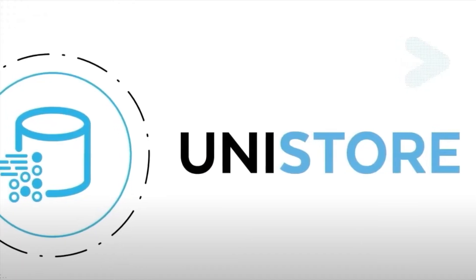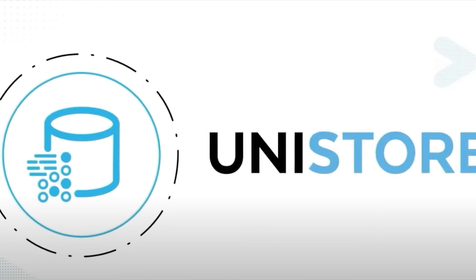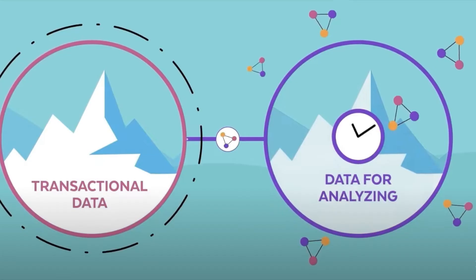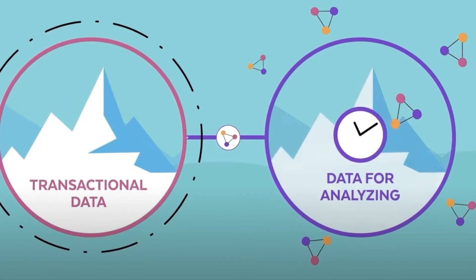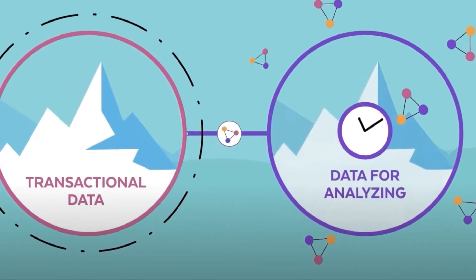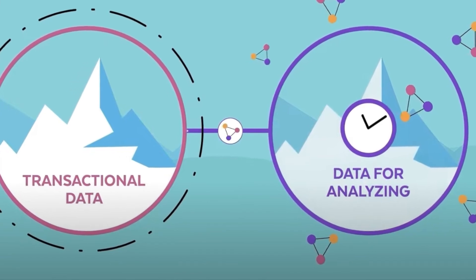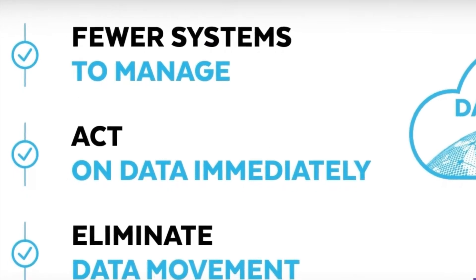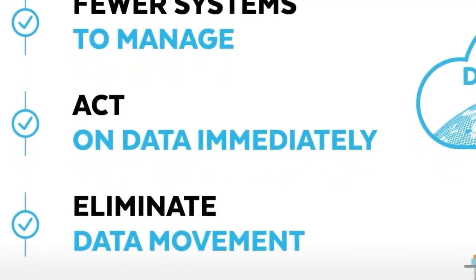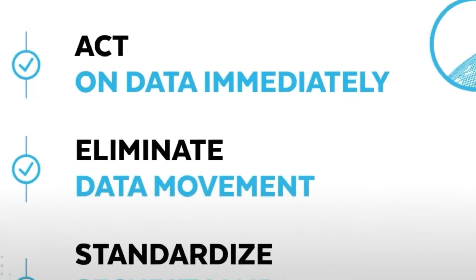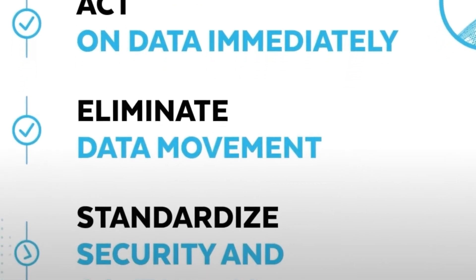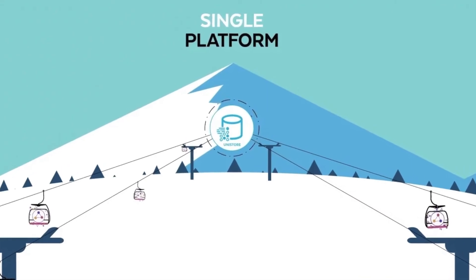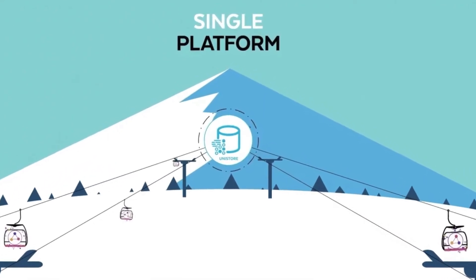Next up, we have Unistar and hybrid tables. In short, this allows Snowflake to handle both OLAP and OLTP — analytical warehouse workloads as well as transactional workloads — whereas typically you'd need two different types of databases tuned for those different workloads. Unistar aims to bring those together within the Snowflake service, using hybrid tables as the way to deploy that within Snowflake.